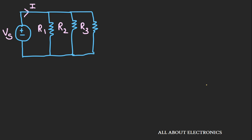Now let's look at resistors connected in a parallel combination. Here, three resistors R1, R2, and R3 are connected in parallel with one voltage source. Whenever resistors are connected in parallel, the voltage across each resistor remains the same — that is the voltage Vs. Let's assume the current supplied by the voltage source is I. This current I will get divided into three branches: I1, I2, and I3.